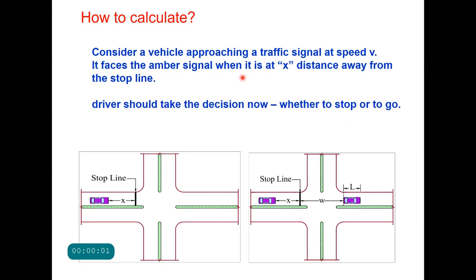How do we calculate the length of the dilemma zone at an intersection? Let us consider a vehicle approaching a traffic signal at speed v, and the driver faces the amber signal when it is x distance away from the stop line. The driver must now decide whether to stop or to continue.